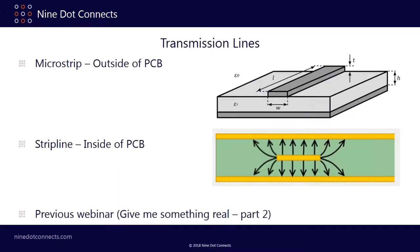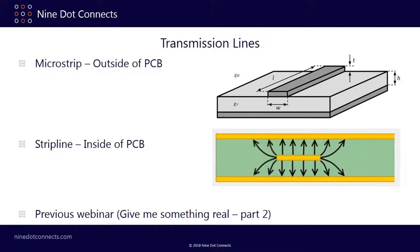A brief overview of transmission lines: a microstrip is where the transmission line is outside the PCB with a reference plane inside. A stripline is inside the PCB, typically with two reference planes surrounding the signal plane. For more detail on the issues with microstrip routing style, contact us about a previous webinar called 'Give Me Something Real Part 2,' where this is covered in depth.